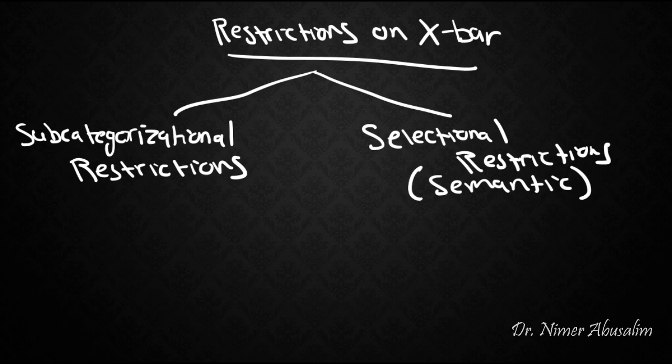We discussed two restrictions that we can put on X-bar. The first is subcategorization restrictions and the second is selectional or semantic restrictions. We've already discussed subcategorization restrictions in the previous lecture.